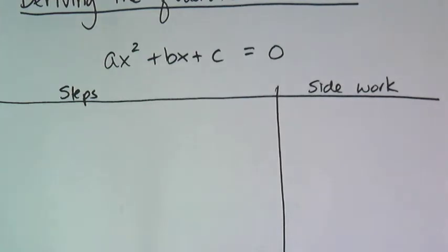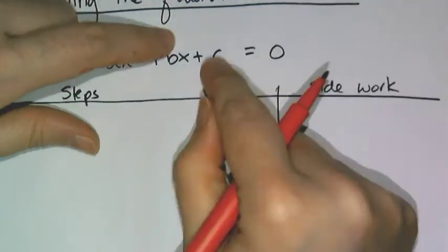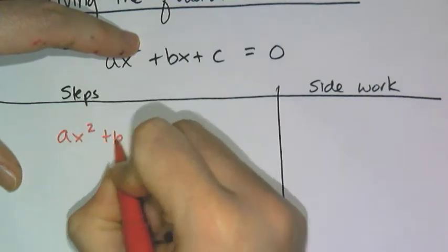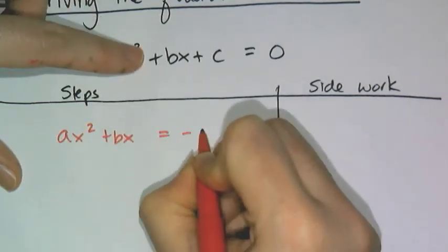All right, so I'm completing the square. And so I need to do all of the steps I would for completing the square, which first off is to move that c over. So I get ax squared plus bx equals negative c.